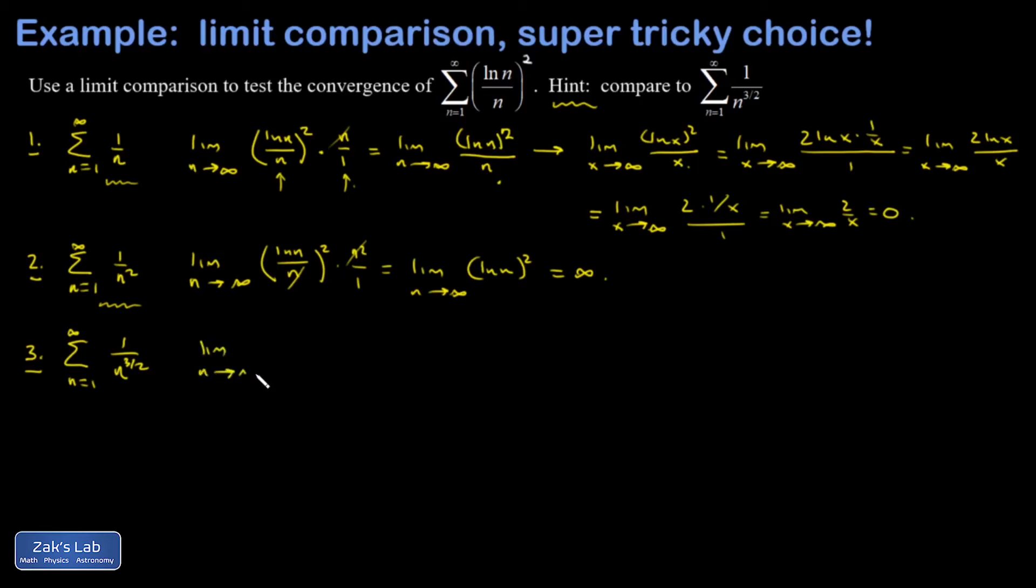And I set up the limit comparison. Again, dividing by one over n to the three halves is the same as multiplying by its reciprocal. And I have an n squared in the denominator, n to the three halves in the numerator, which is going to leave me with a square root of n in the denominator. And that's an infinity over infinity indeterminate form.